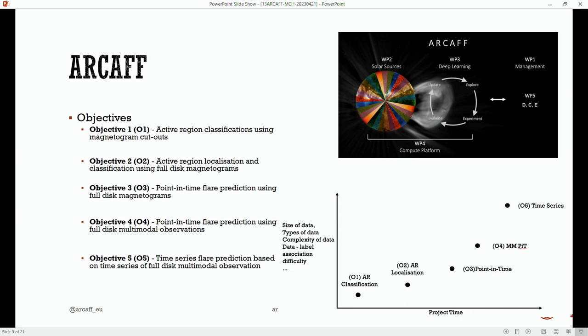The project is broken down into five objectives. We start off with a very simple task—relatively simple task—of active region classification, so taking standard proven technology to classify images of active regions. Then we want to move on to active region localization and classification, so the idea is you give it a full disk image of the Sun, you get the bounding boxes and the classifications. Then we start to ramp up in complexity where we move on to point-in-time flare forecasting where we give it a single image and forecast the likelihood of a flare in the next 12 to 24 hours, similar to what's done already.